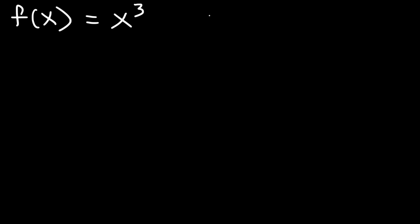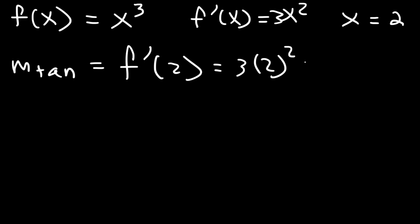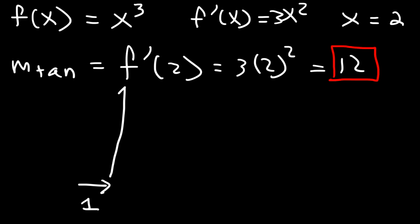Let's say f(x) is x cubed. Using the power rule, the first derivative is 3x squared. If we want the slope of the tangent line when x equals 2, that's f prime of 2, which is 3 times 2 squared, so it's 12. This means that at x equals 2, the slope is 12 — meaning as you travel one unit to the right, the curve increases by 12. Every time the x value increases by 1, the y value increases by 12.